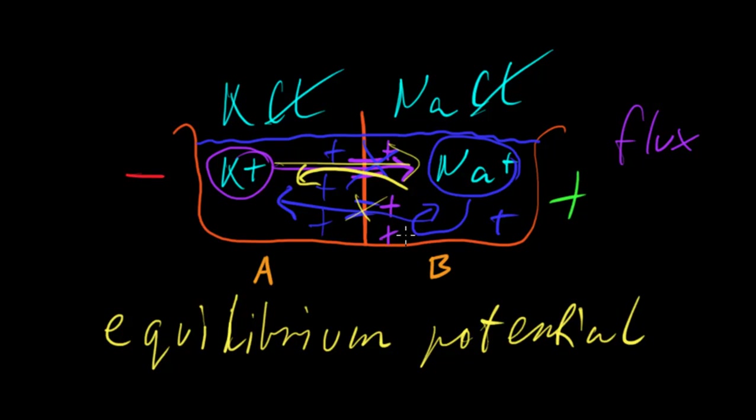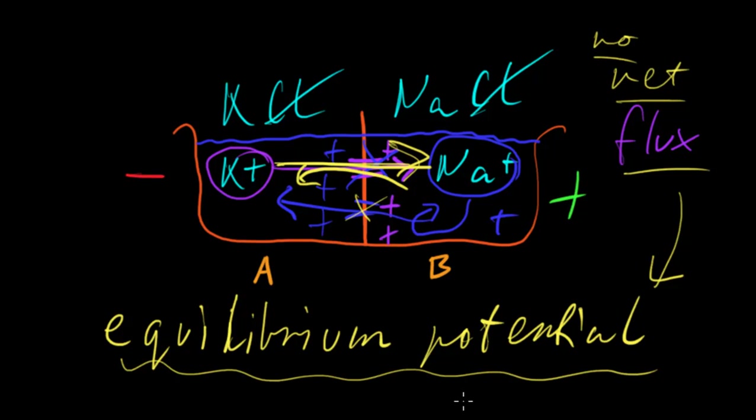So we're going to get some going back the other way and this is called an electrical potential. And so when the electrical potential is equal in magnitude and in its opposite in direction to the concentration gradient, then we get what we call no net flux. And when we get no net flux, we call it the equilibrium potential.